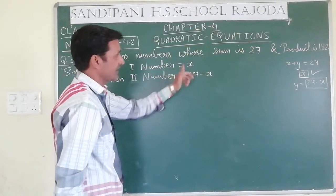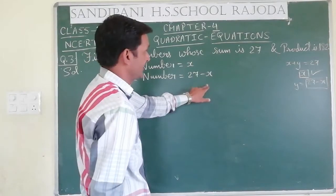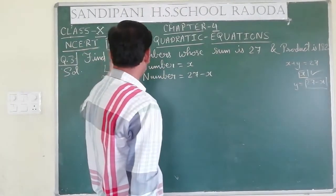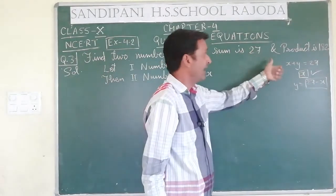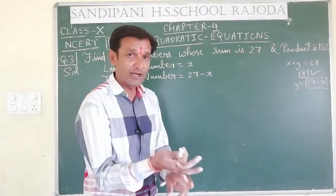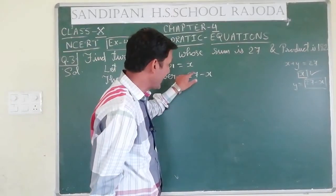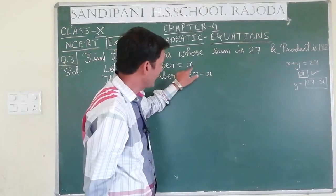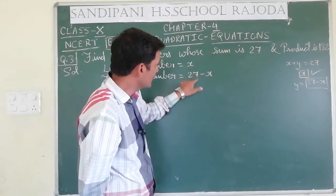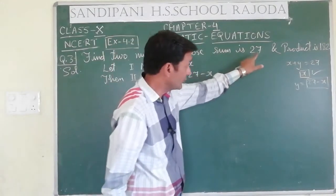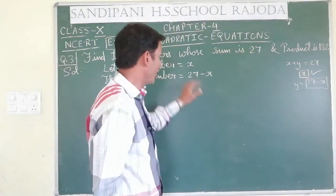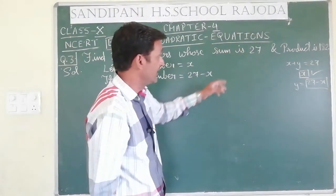So first number is x and second number is equal to 27 minus x. You can verify: if we add x and 27 minus x, the x cancels and the result is 27. So the sum of these two numbers is indeed 27.